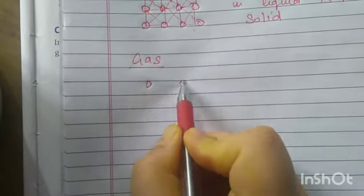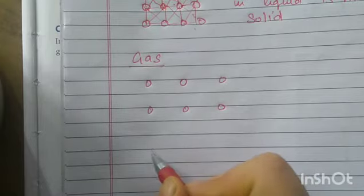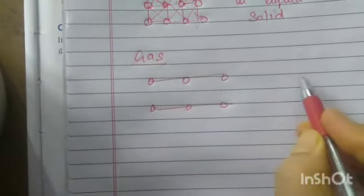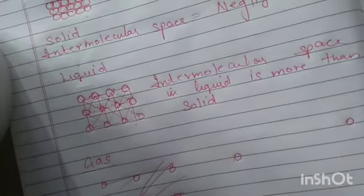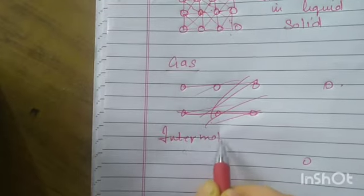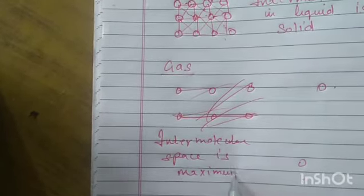Now look at the molecules of the gas. In gas, the molecules are very far away from each other. There is very much space present between the molecules of gas. So the intermolecular space is maximum in between the molecules of gases.